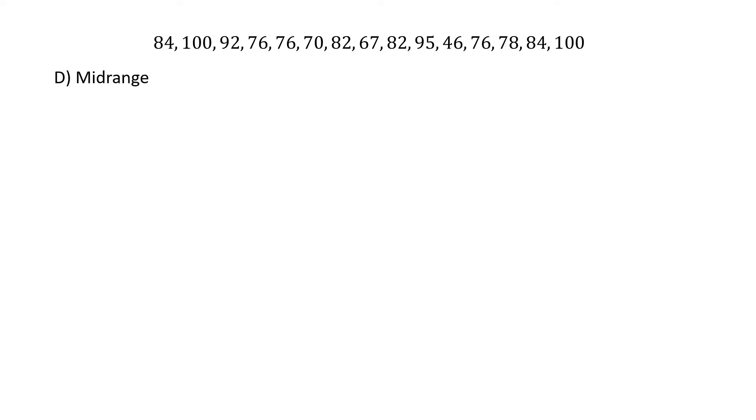Find the midrange. Remember, the midrange is the sum of the lowest value plus the highest value divided by 2. From the previous part, we already ranked the data, so we know that the lowest value is 46. We're going to add that to the highest value of 100 and divide it by 2. The sum is 146. Divide that by 2. We get the midrange, 73.